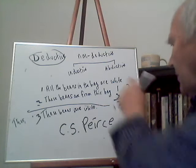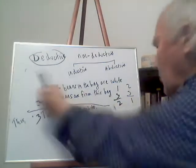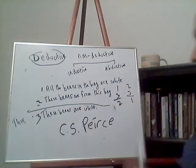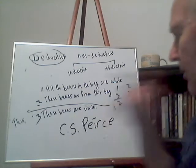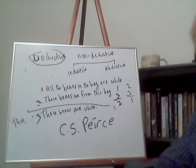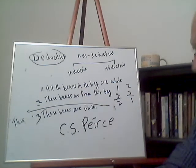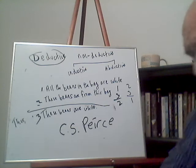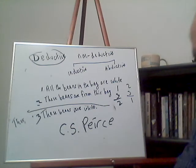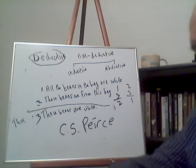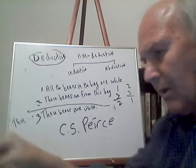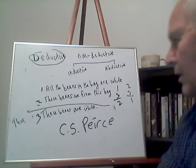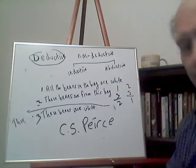For the third form, the conclusion is statement one. The premises are two and three: these beans are from this bag, and these beans are white. From that we conclude that all the beans in the bag are white.